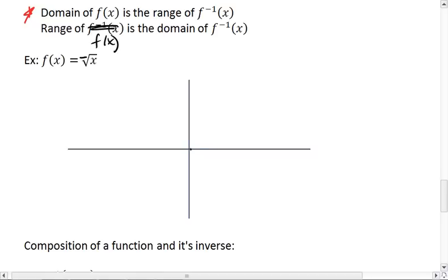And we know that square root of x looks like this. So the negative will reflect across the x axis, giving me the graph that you now see on your screen.